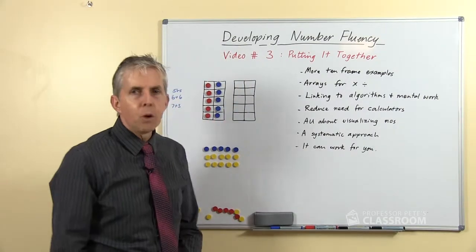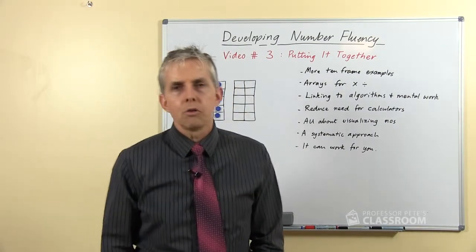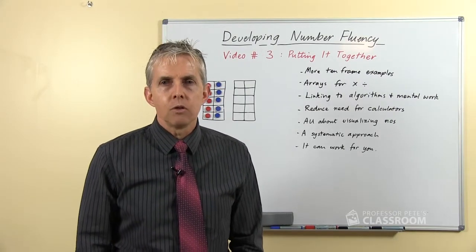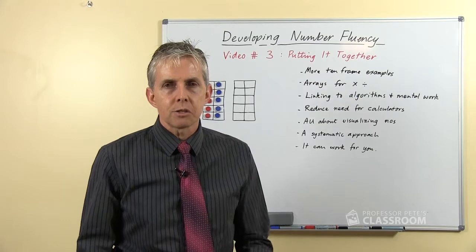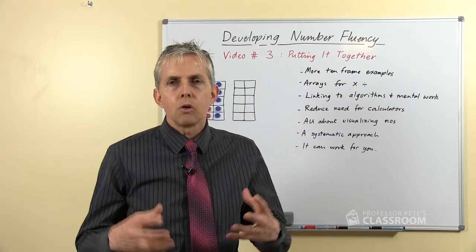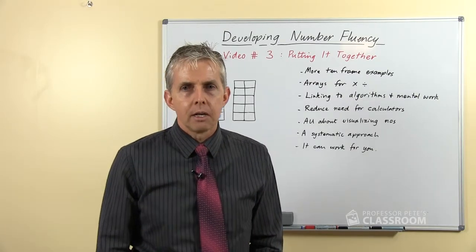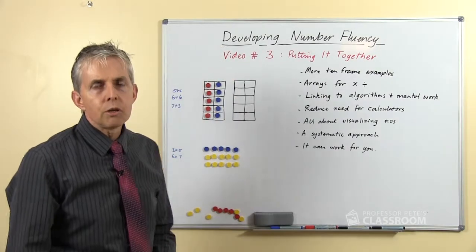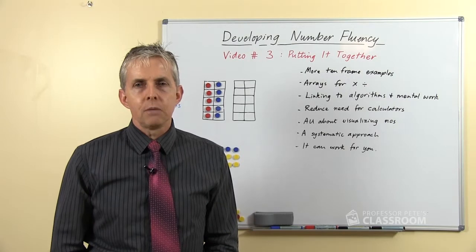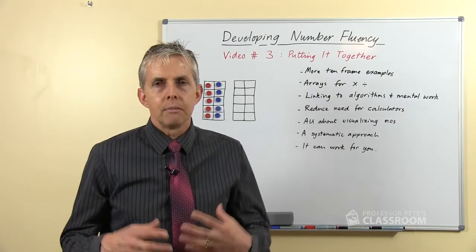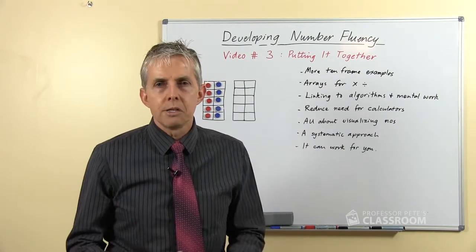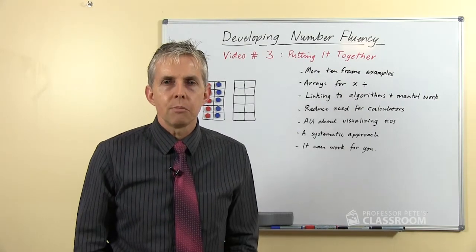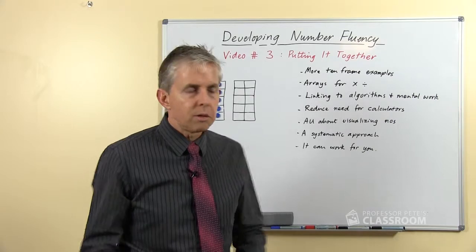But now we're moving on. I want to put it all together. I want to talk more about the system that I'm recommending for developing number fluency through mental strategies and talk about some of the component parts. I thought I'd start by talking a little bit more about the 10 frame examples. It's such a big topic, we can use 10 frames for so many different types of number work that it's worth spending a bit more time on.